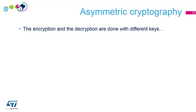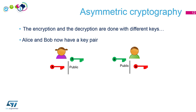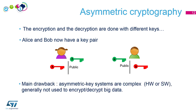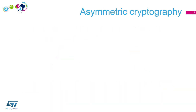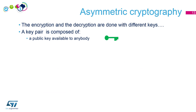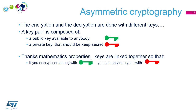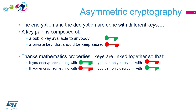Let's continue with asymmetric cryptography. Now encryption and decryption will be done with different keys — that's explaining the name 'asymmetric'. Bob and Alice each have a key pair: a public key associated with a private key. The main drawback of asymmetric key systems is the complexity — it's very difficult to encrypt a huge volume of data in an efficient way, so it's usually used for tiny data. A key pair is composed of a public key — which is available to anybody — and a private key, which should be kept secret. They are linked together by mathematical properties: if you encrypt something with a public key, you can only decrypt it with the associated private key, and symmetrically, if you encrypt with a private key, you can only decrypt it with the public key.